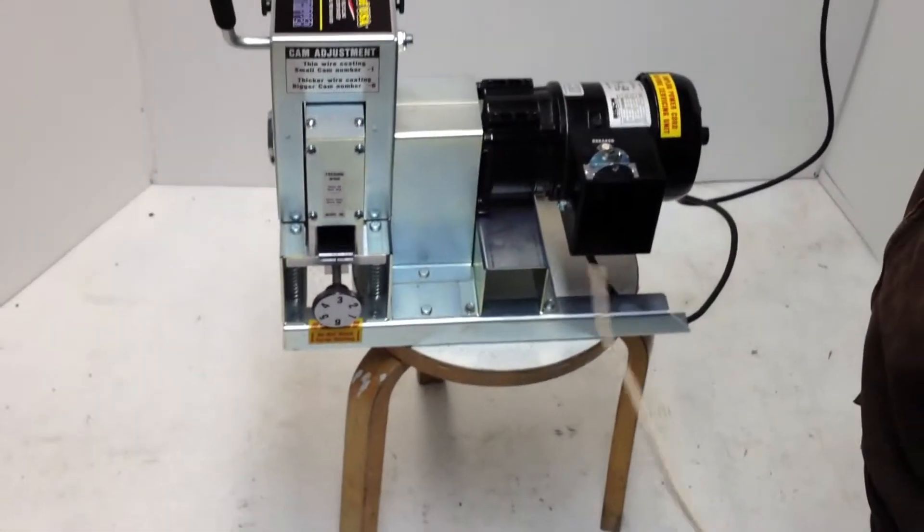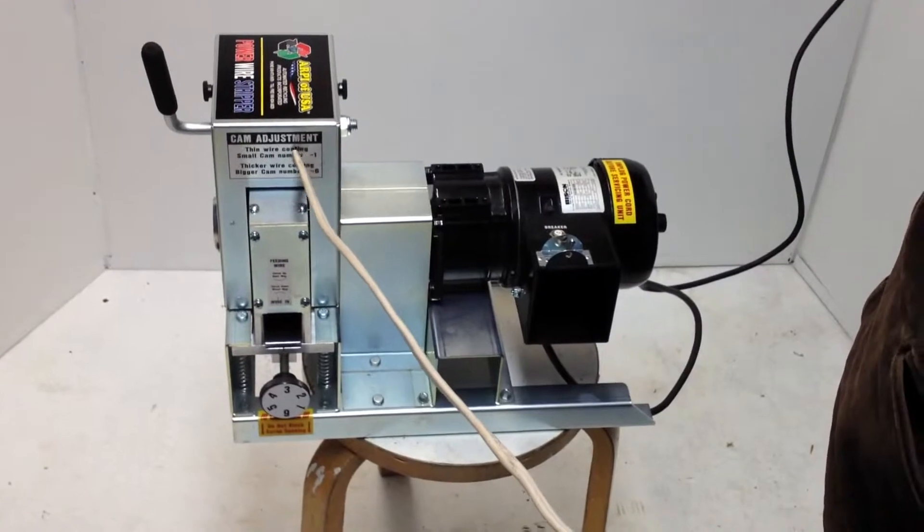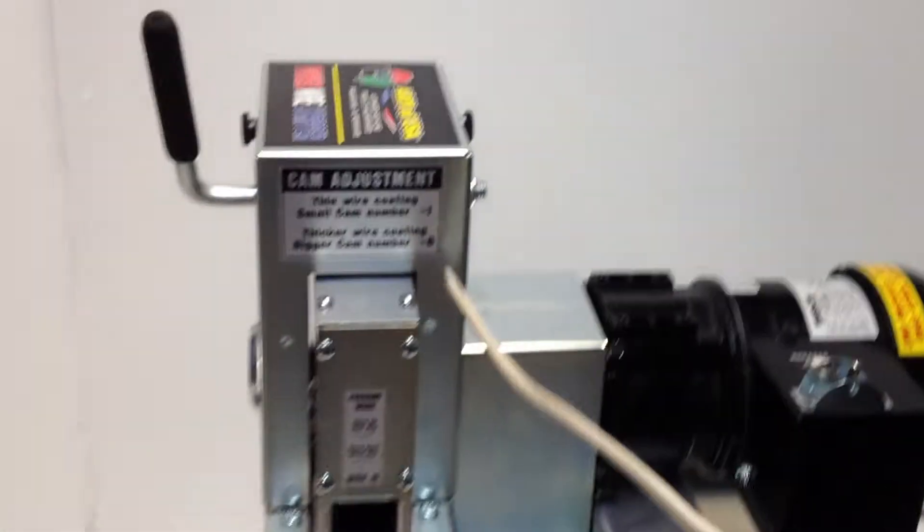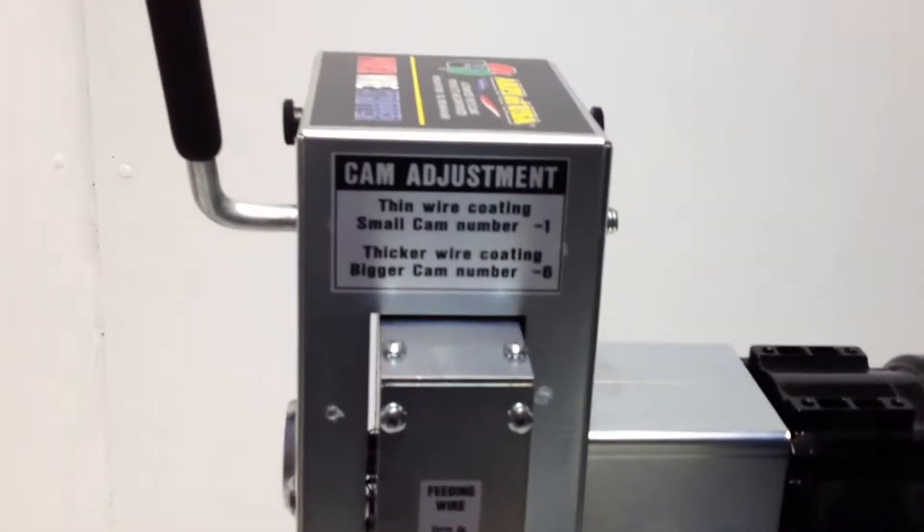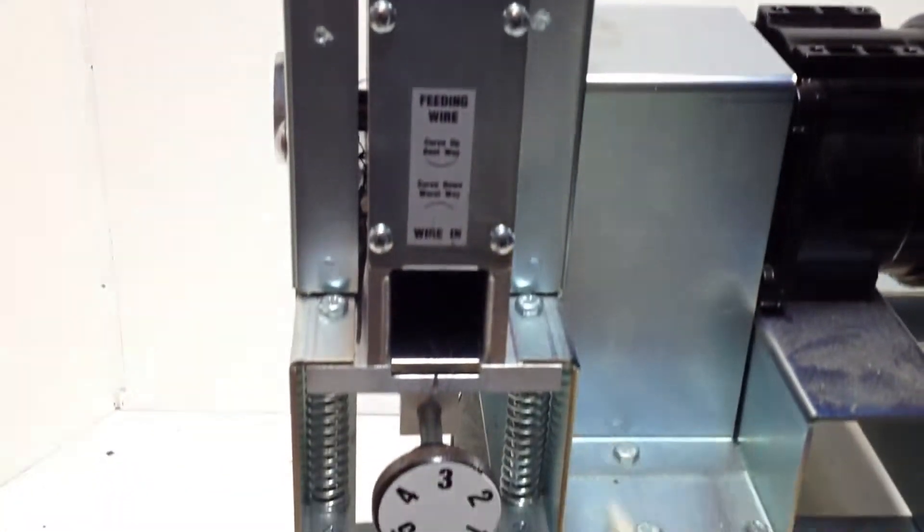The machine comes with directions, read them when you use them. The cam adjustment settings on it go from one to six, and this is your cam adjustment setting, and this is the input for the wire.